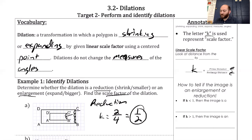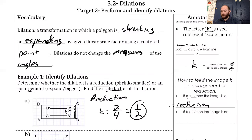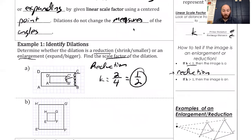That leads me to this next point. If my scale factor is less than one, then the image is a reduction. If you have a fraction, it has to be less than one for it to be a reduction. If K is greater than one, then the image is an enlargement.